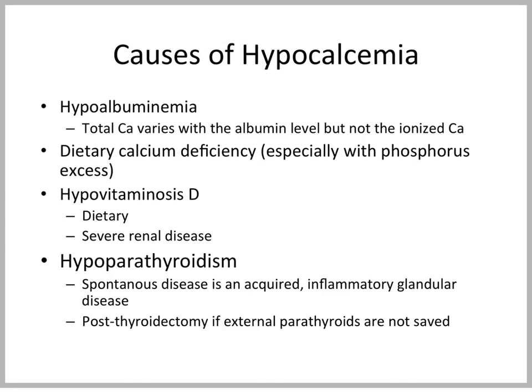Let's take a look first at what causes hypocalcemia. It's important to distinguish reduced total calcium, which can occur just because of reduced amount of binding protein — the main binding protein being albumin. So in animals that have hypoalbuminemia, whether due to GI loss, renal loss, or blood loss, you can see a lower total calcium but not ionized calcium. That's why, from a clinical standpoint, it's always important to measure ionized calcium where possible.